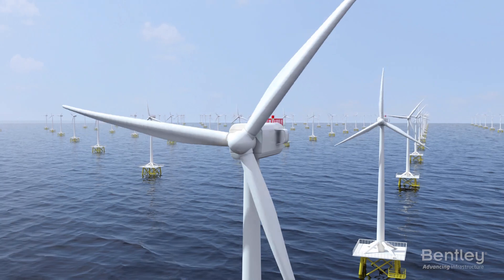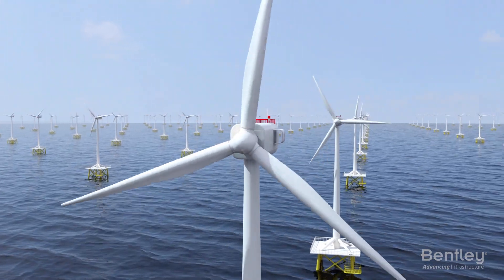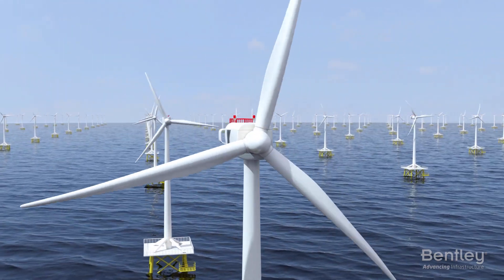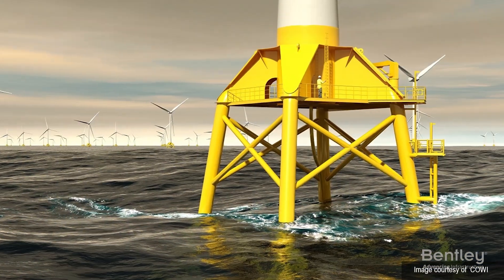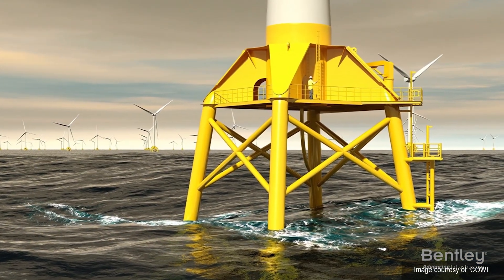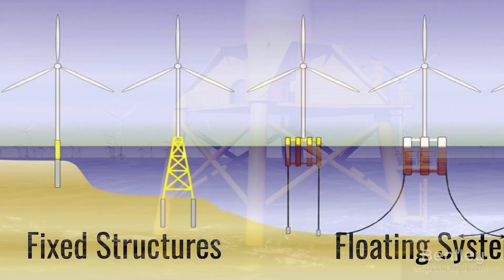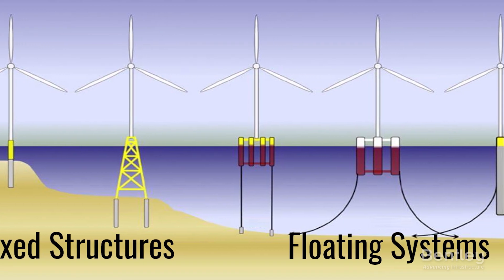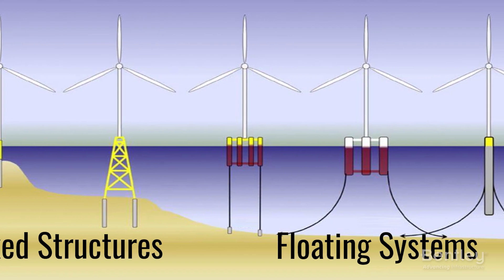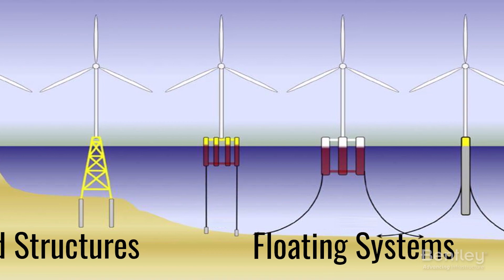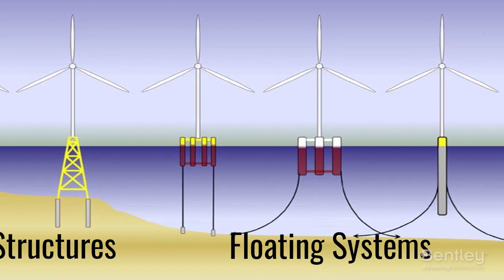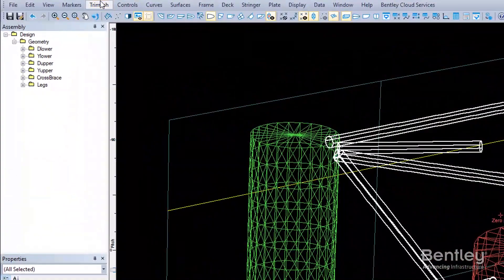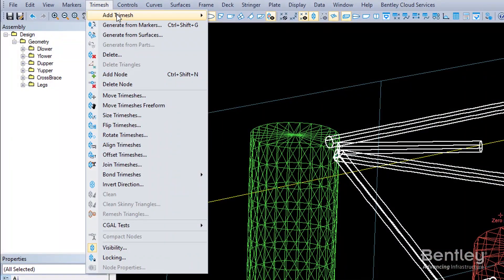OpenWindPower provides a comprehensive set of capabilities for the design and analysis of offshore wind turbine structures subject to wave, wind, and mechanical loading. OpenWindPower is used for the design and analysis of fixed monopile and jacket-supported wind turbines, and floating semi-submersible and spar systems. All modules work from common model data created with the inbuilt modeling tools.